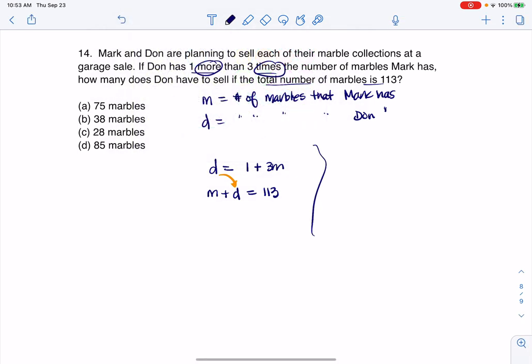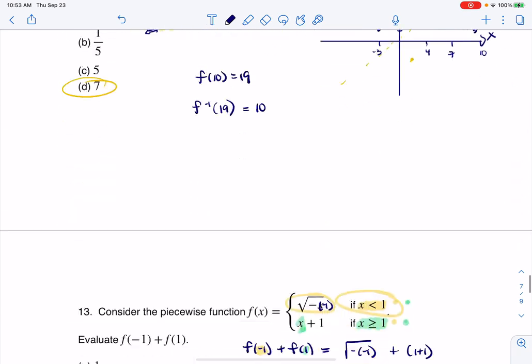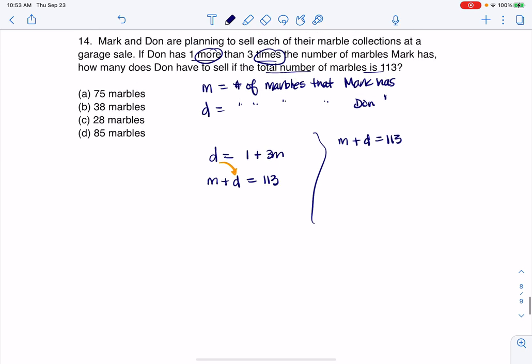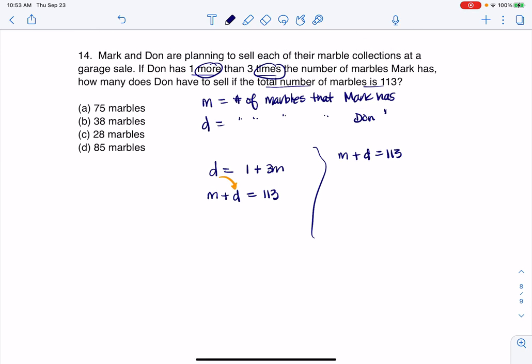So instead of, and I'll just do it over here, I start with M plus D equaling 113. Oh my goodness. Whoa. That was fun. Hold up. Wait for it. We're back. I don't even know what I did. That's always fun.